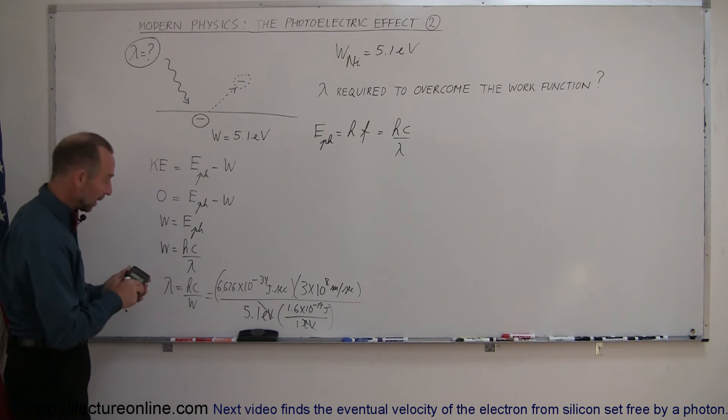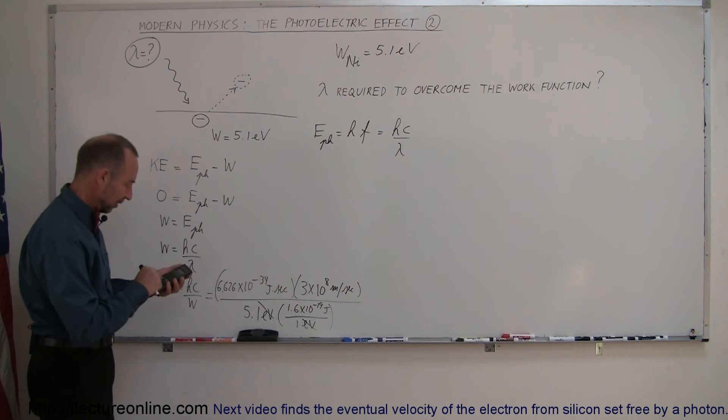All right, now with my calculator, I will figure out what that is equal to, 6.626 e to the 34 minus times 3 e to the 8, and divide the whole thing by 5.1, and then the conversion to joules. That's a little too fast,